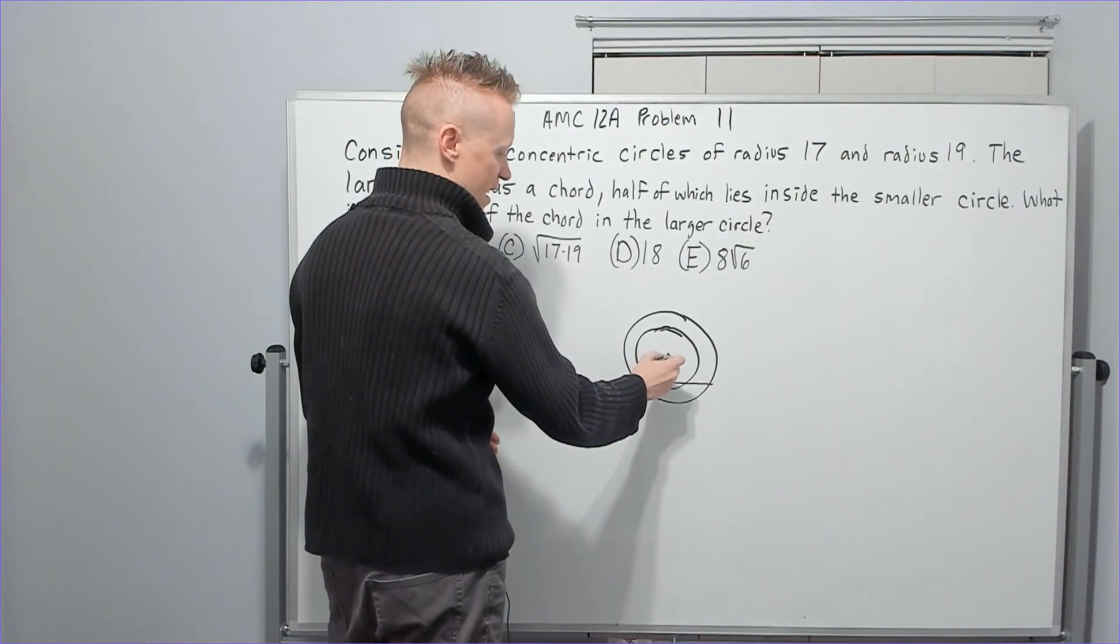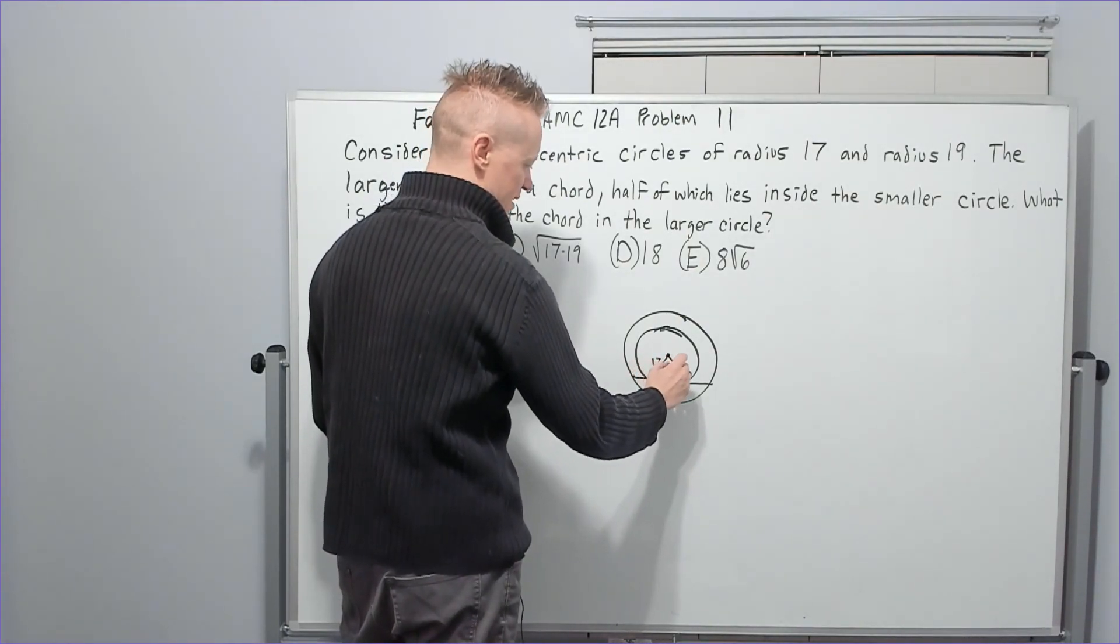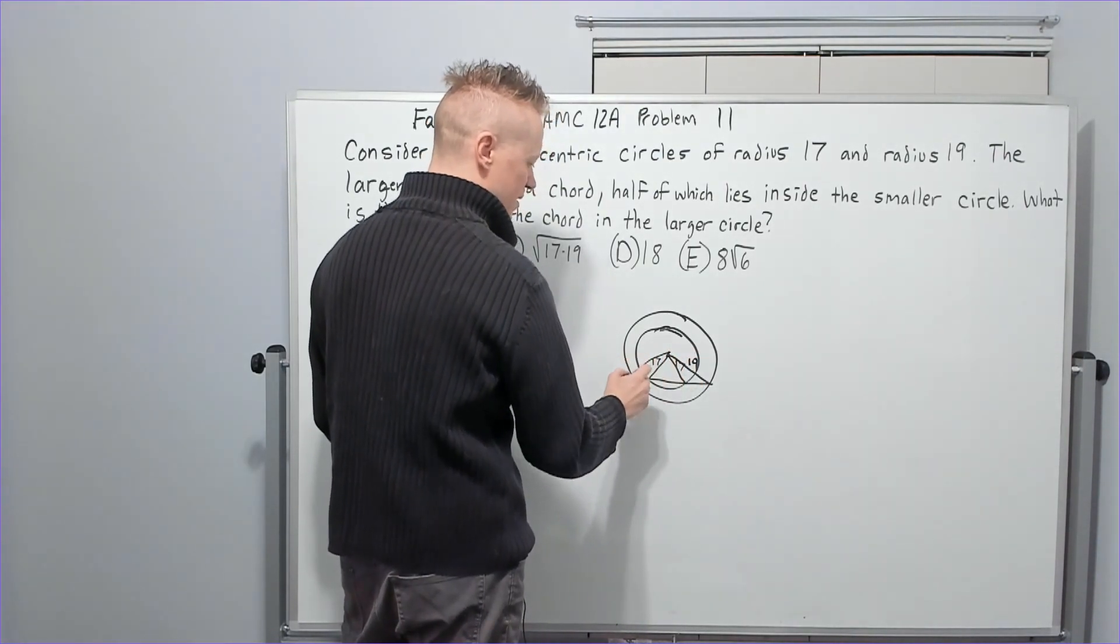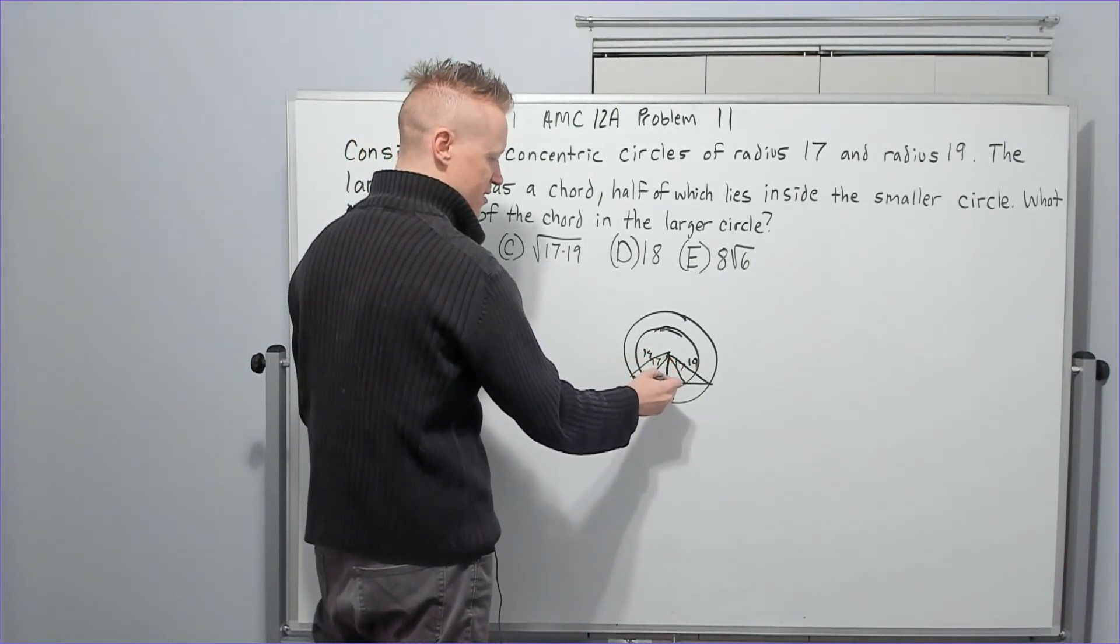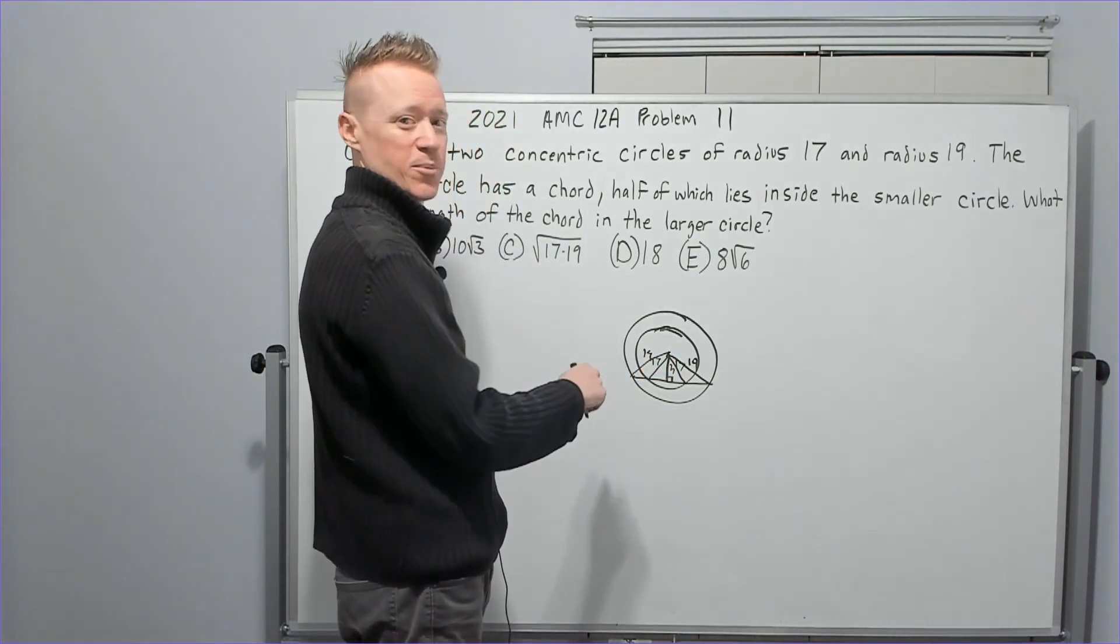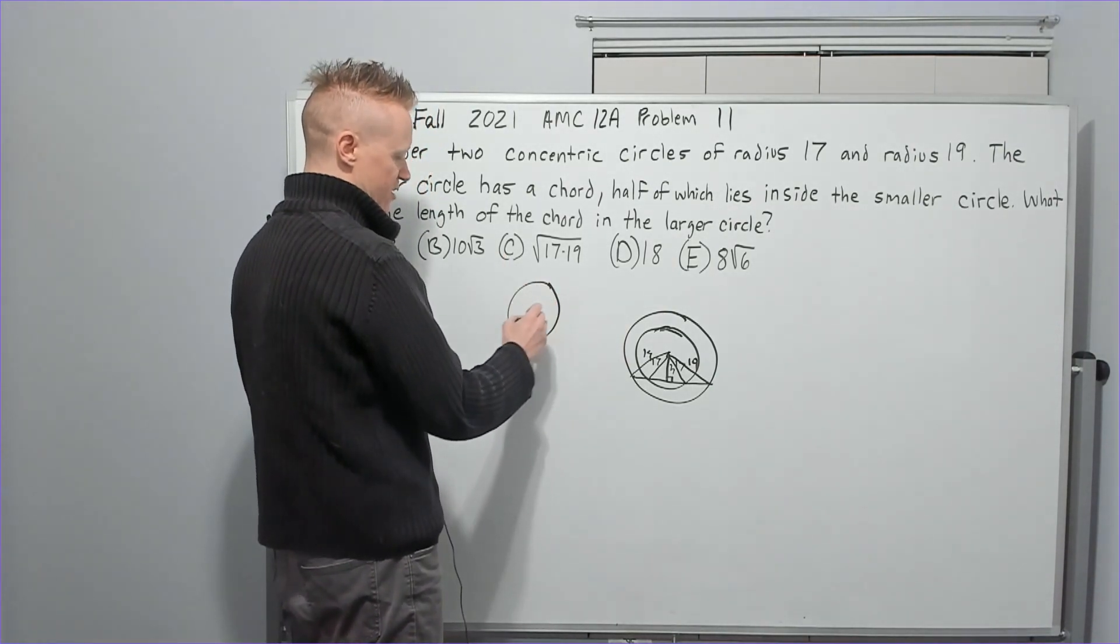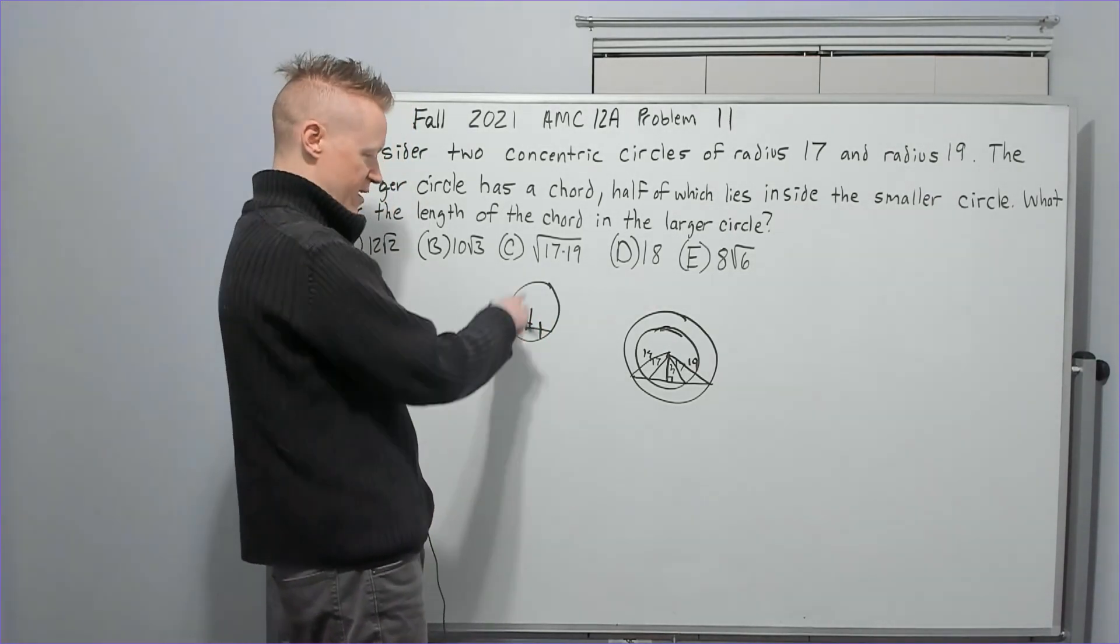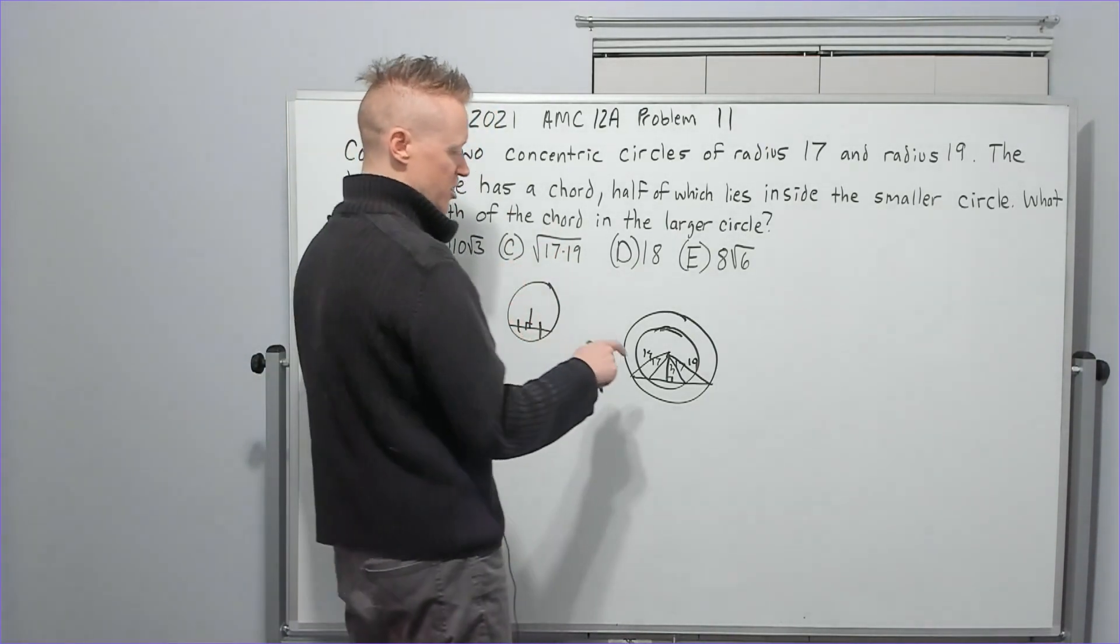So start figuring stuff out. From the center, I can draw to here and here, and that's going to be 17. I can also draw to here and over here, and those are going to be 19. What kind of triangles are those? Isosceles. And when you have isosceles, you can drop the altitude and get congruent triangles. We can call that altitude H. It will be perpendicular and bisect the chord. That is always true.